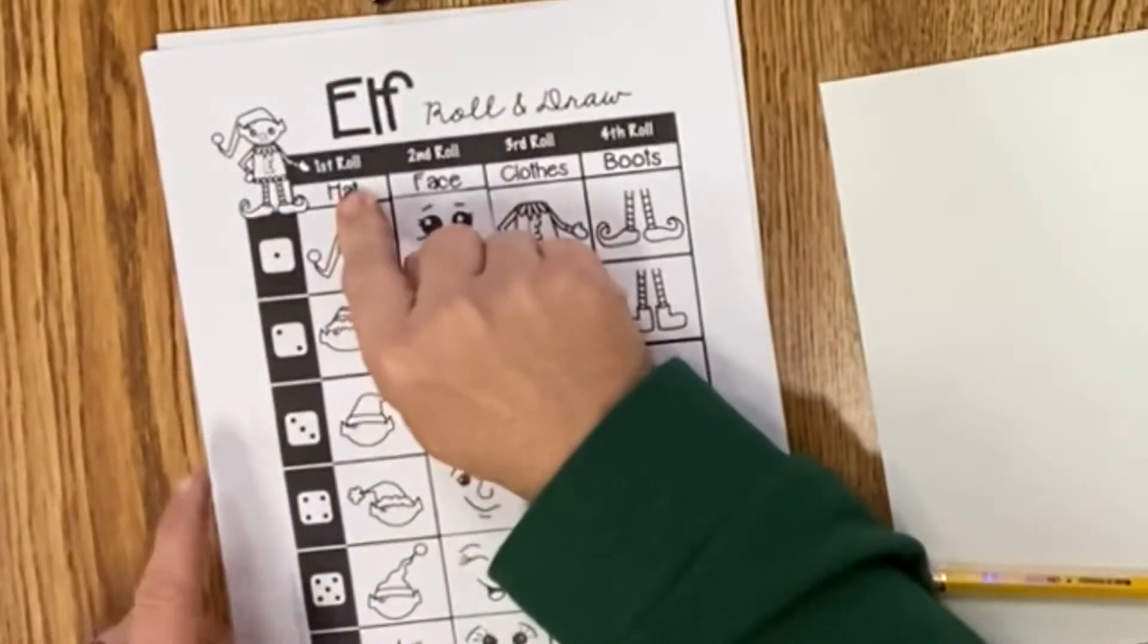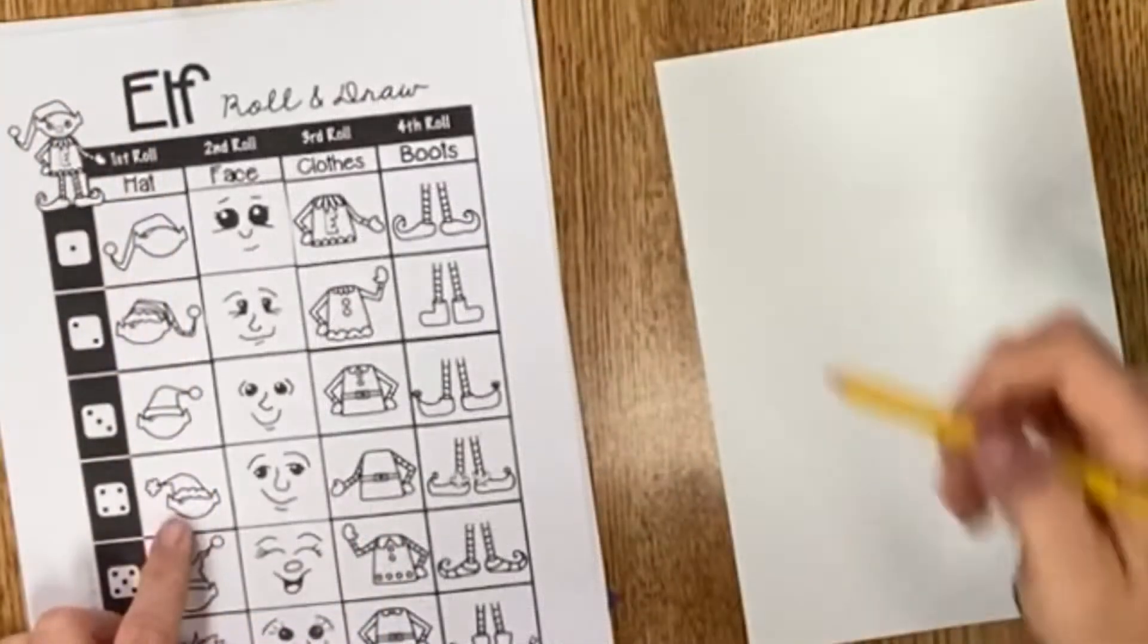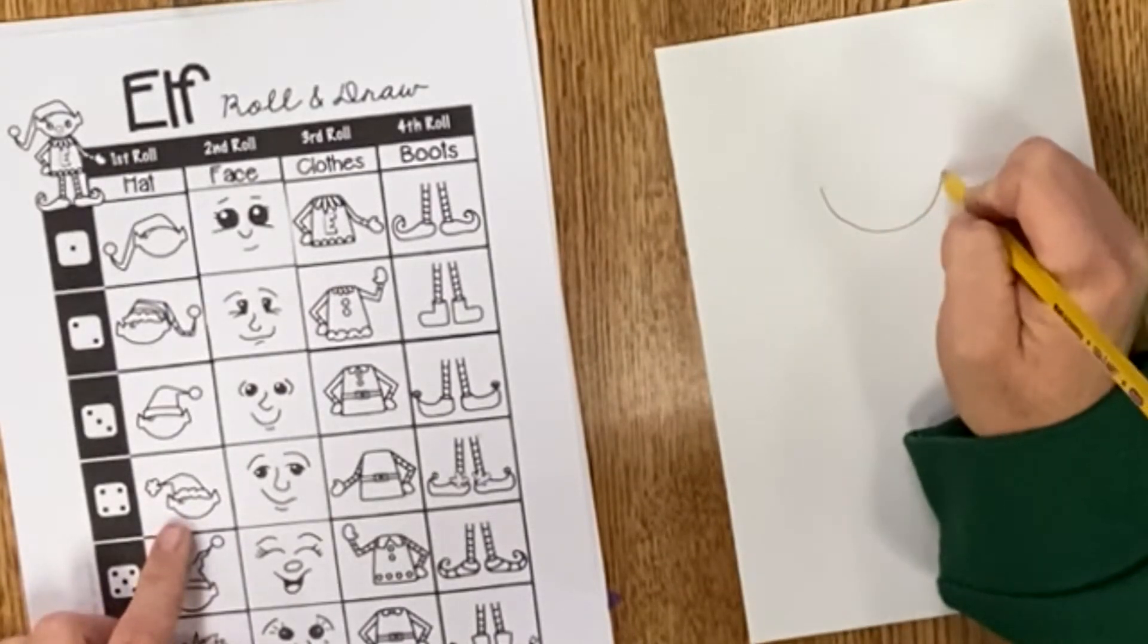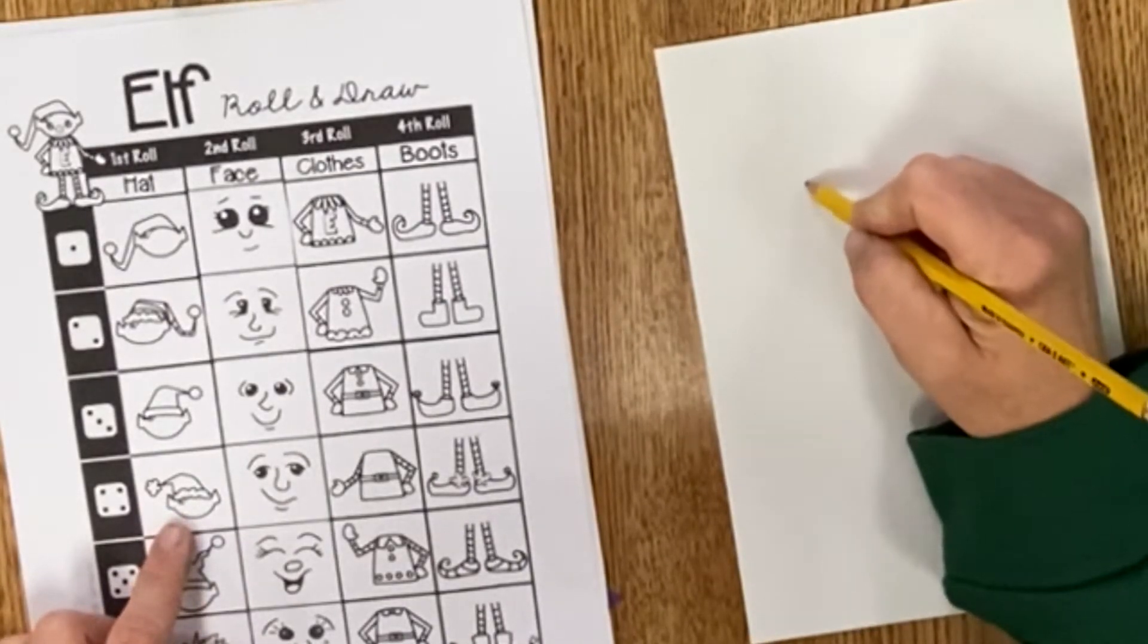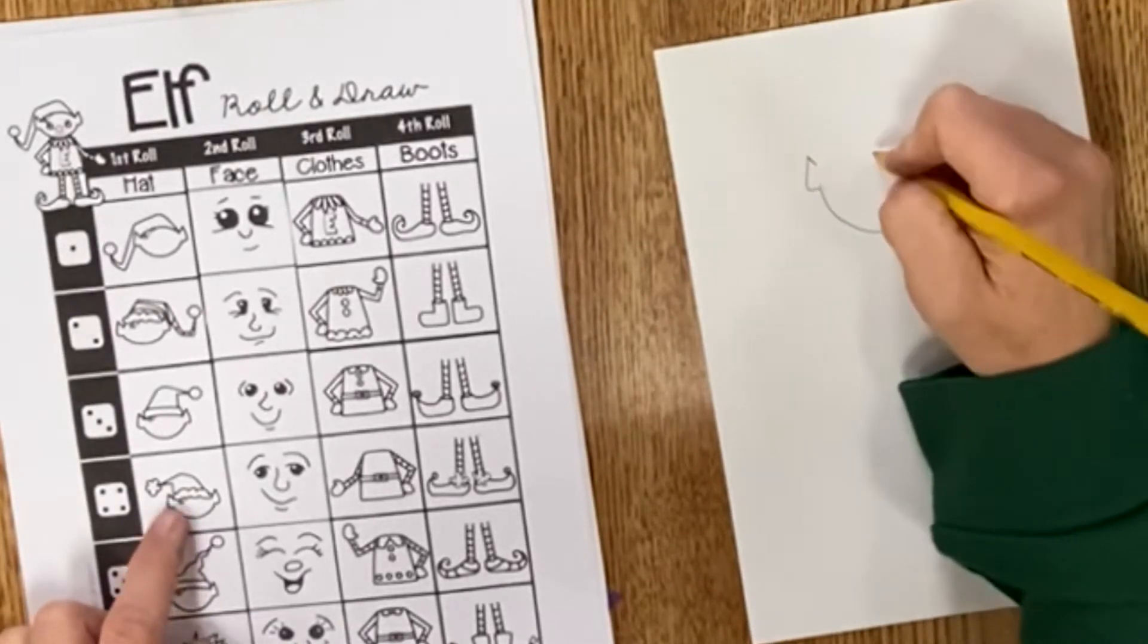I see I have a four, so I go up to first roll and then I come down to number four and I draw that face. Starting off with a kind of a U-shape, and I draw up for each ear and then along the line of the hat.